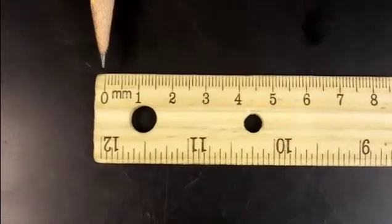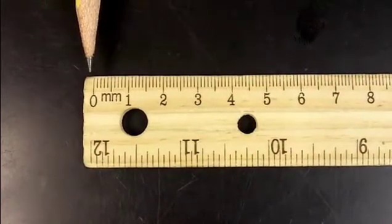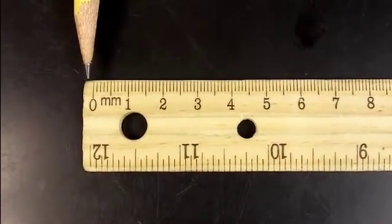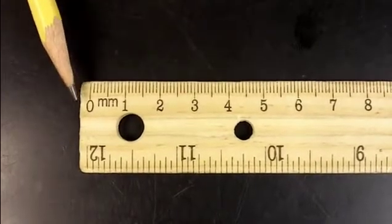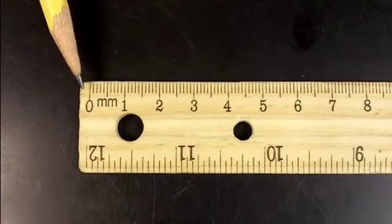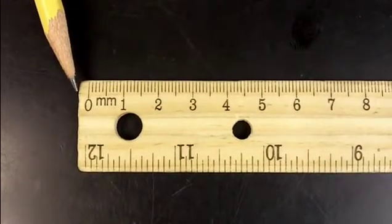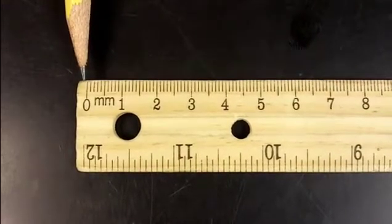When using a ruler, it's important to understand that the ruler does not start at the end. It always starts a little bit in. That's because, over time, the end of the ruler gets worn down. And also, when you make the ruler, it's difficult to put the first line right on the edge. So, rulers always start a little bit in.